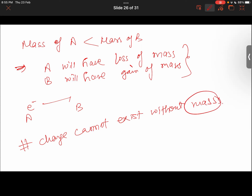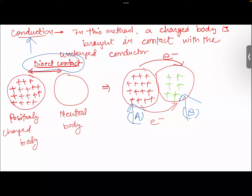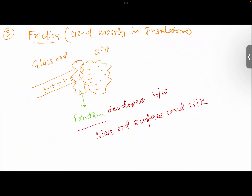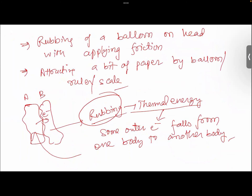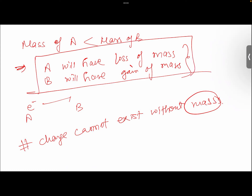In this presentation we talked about three methods of charging. First, conduction: a charged body is brought in direct contact with an uncharged conductor. Second, induction: a charged body is brought close to an uncharged conductor but does not touch it. Third, friction: developed by rubbing, producing thermal energy, causing outer electrons to fall from body A to body B — thus A has loss of mass and B has gain of mass, since charge cannot exist without mass. In the next presentation we will talk about Coulomb's law of electrical force. Thanks for watching.